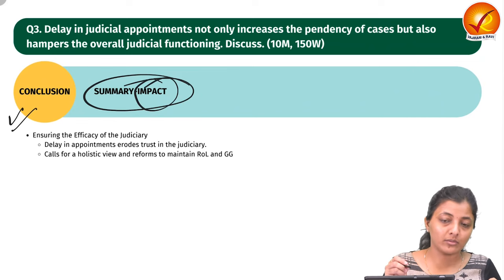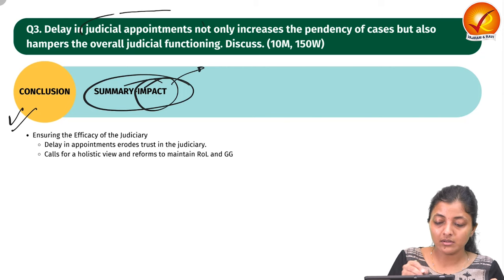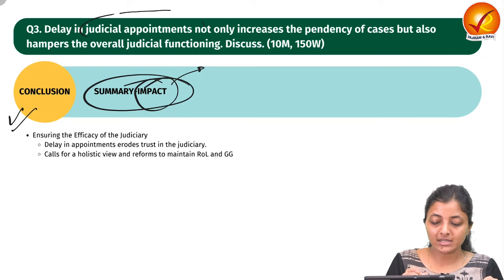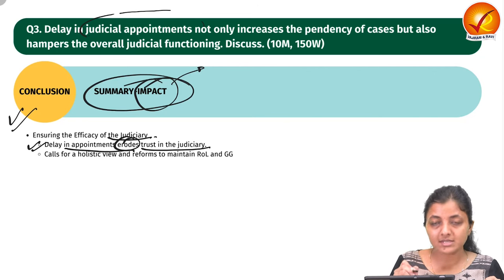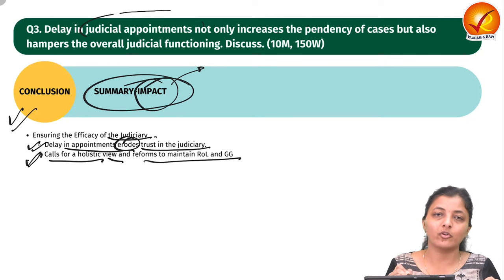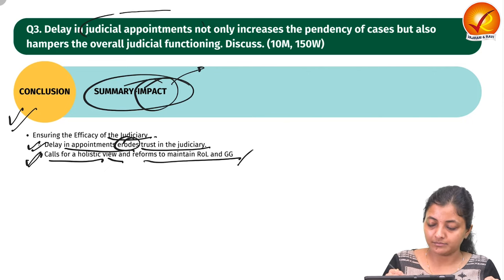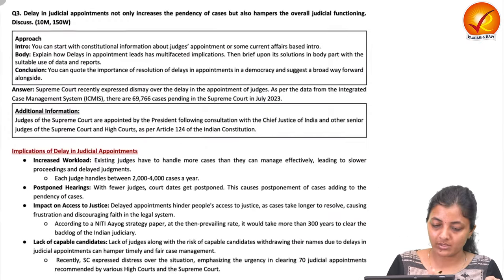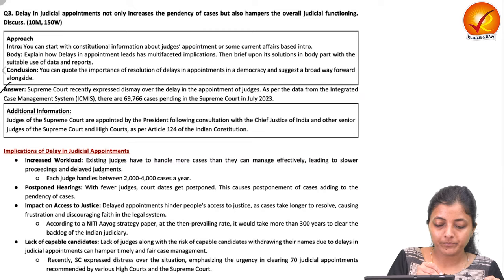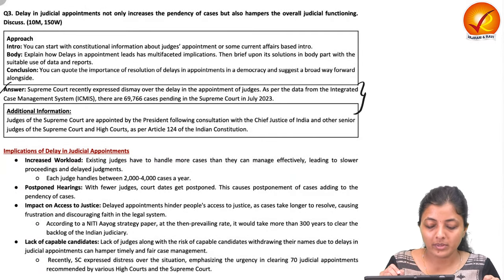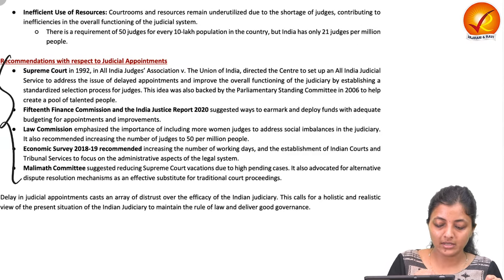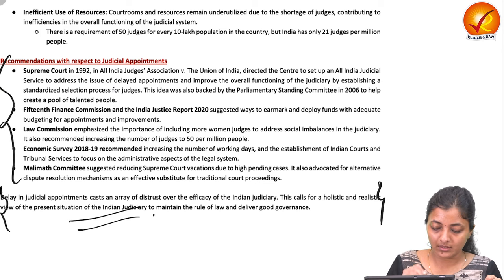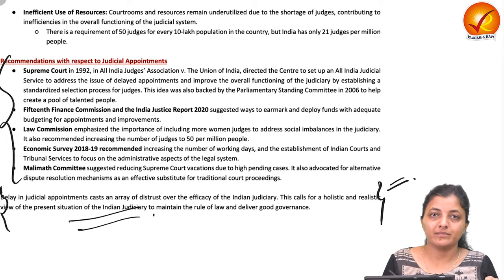In conclusion, delays in judicial appointments have serious negative effects, including rising case pendency, erosion of public trust, and talent drain. To ensure judicial efficacy, delays in appointments should not be prolonged. This calls for holistic reforms to maintain the rule of law and good governance. The model answer begins with the Supreme Court's expressed concerns and pending cases, covers implications and recommendations, and concludes accordingly. This completes all three questions — thank you and have a nice day.